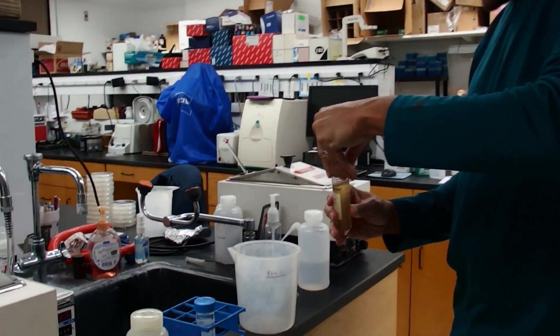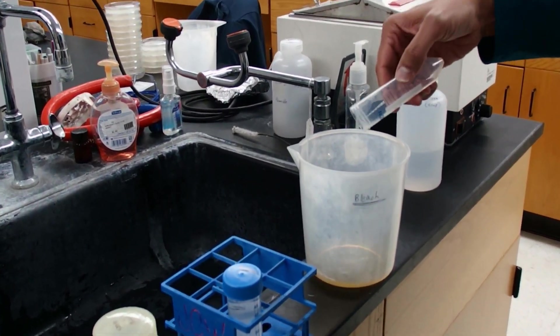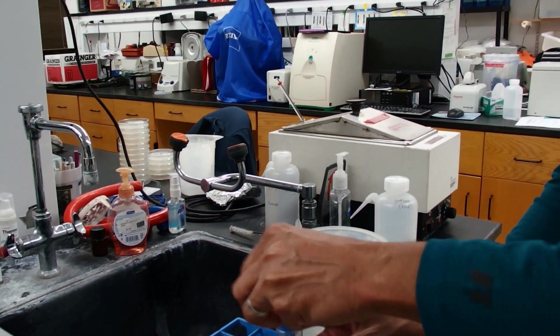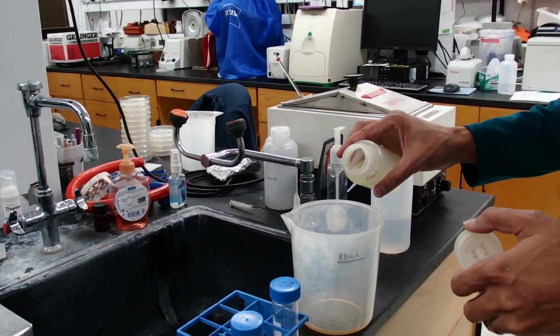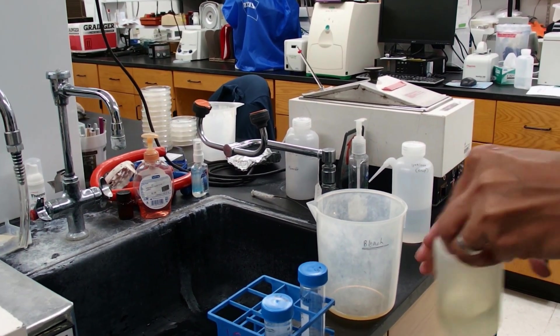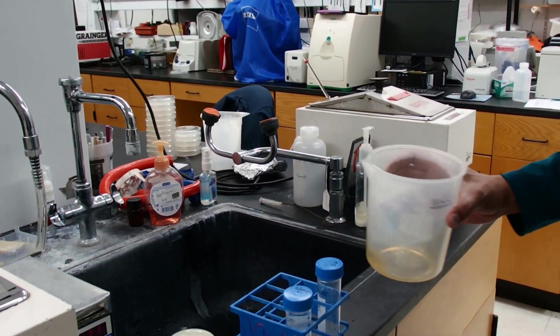We'll pour away our supernatant, keeping our pellet. So we'll slide our pellet there and add just a little bit of bleach to the supernatant to kill all the bacteria before throwing it down the drain.